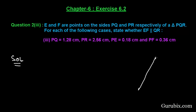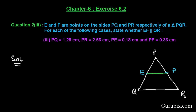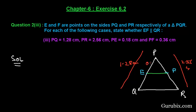Let us draw a rough sketch of triangle PQR. This is triangle PQR and suppose we have two points E and F on the sides PQ and PR respectively. Let us join these two points E and F. We have been given: PQ is 1.28 cm, PR is 2.56 cm, PE is 0.18 cm, and PF is 0.36 cm.